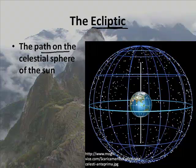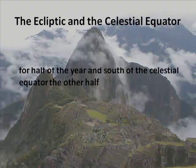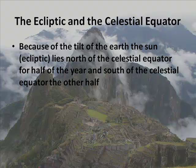What is the ecliptic? That is the path on the celestial sphere of the sun. The sun moves across the sky, but it follows a particular pattern. Because of the tilt of the Earth — which we're going to talk about in detail in the next podcast — it lies north of the celestial equator for half of the year, and south of the celestial equator for the other half.